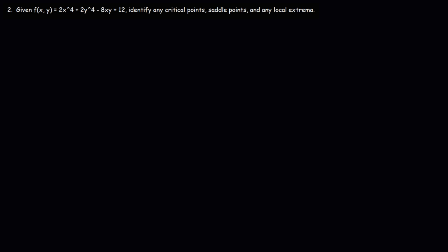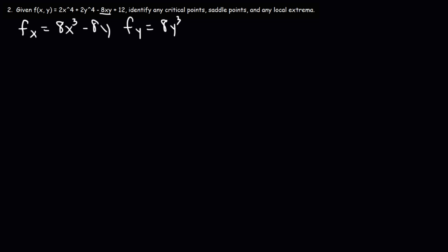Now let's work on another example problem. Feel free to pause the video if you want to try it. The first thing we're going to do is find the partial derivative with respect to x. The derivative of 2x to the 4th is 8x cubed. The derivative of 2y to the 4th with respect to x is 0. The derivative of negative 8xy is negative 8y, and 12 is a constant so it goes to 0. Now let's find the partial derivative with respect to y. The derivatives of 2x to the 4th and 12 go to 0. The derivative of 2y to the 4th is 8y cubed, and the derivative of negative 8xy is negative 8x.